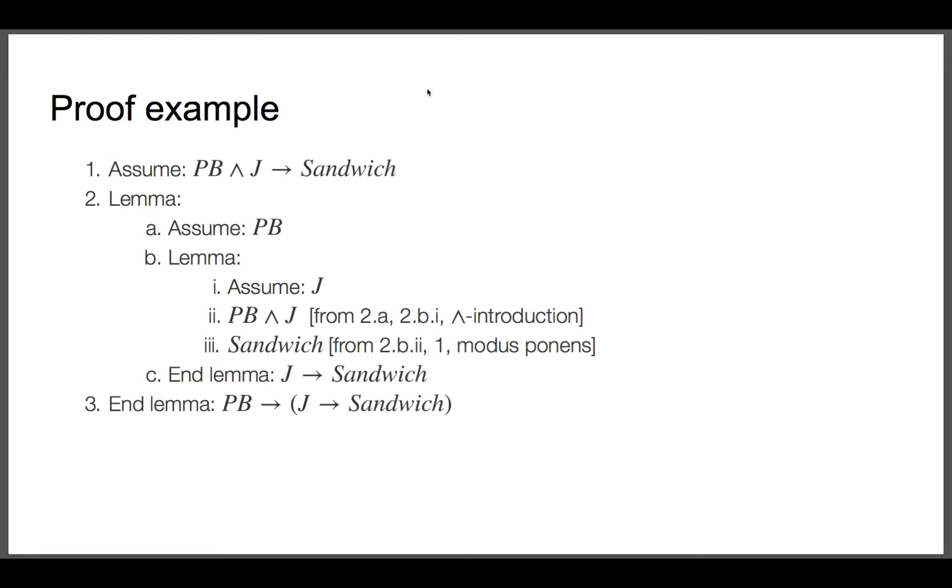What this proof shows is that if you assume that peanut butter and jelly together make a sandwich, then you can conclude that if you give me peanut butter, then later if you give me jelly, I'll be able to make a sandwich.